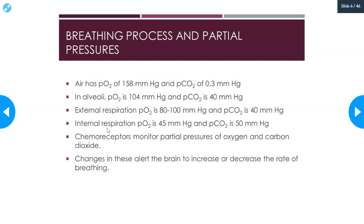Chemoreceptors are chemical receptors in your body that monitor your partial pressures of oxygen and carbon dioxide. They're located in various parts of the body — some are around the brain, some are in the arteries, especially close to the heart. Changes detected by the chemoreceptors alert the brain to increase or decrease the rate of breathing, so that you can get more oxygen or blow off excess carbon dioxide.